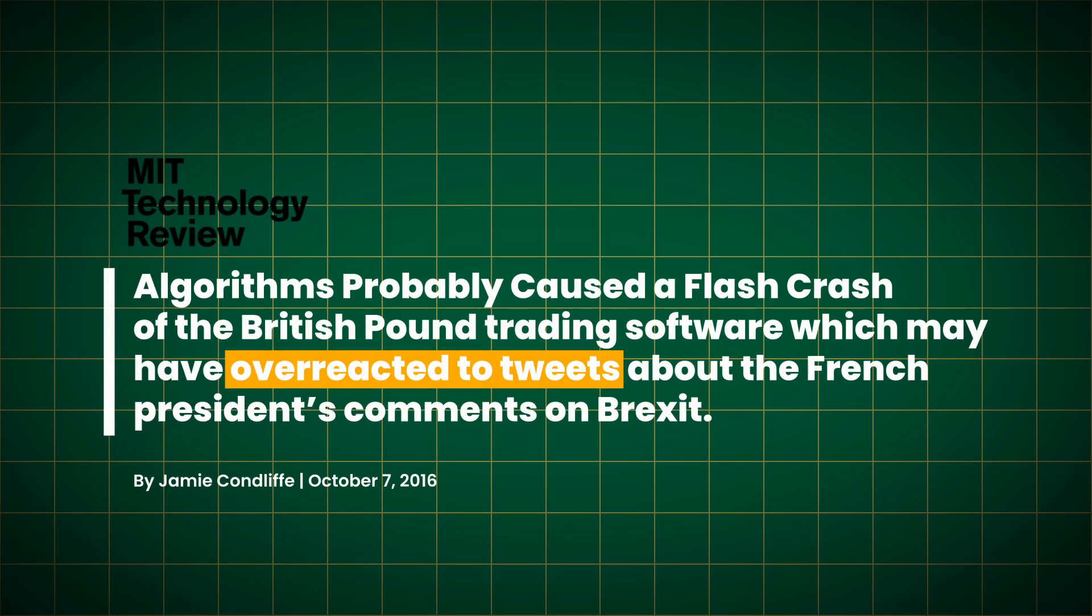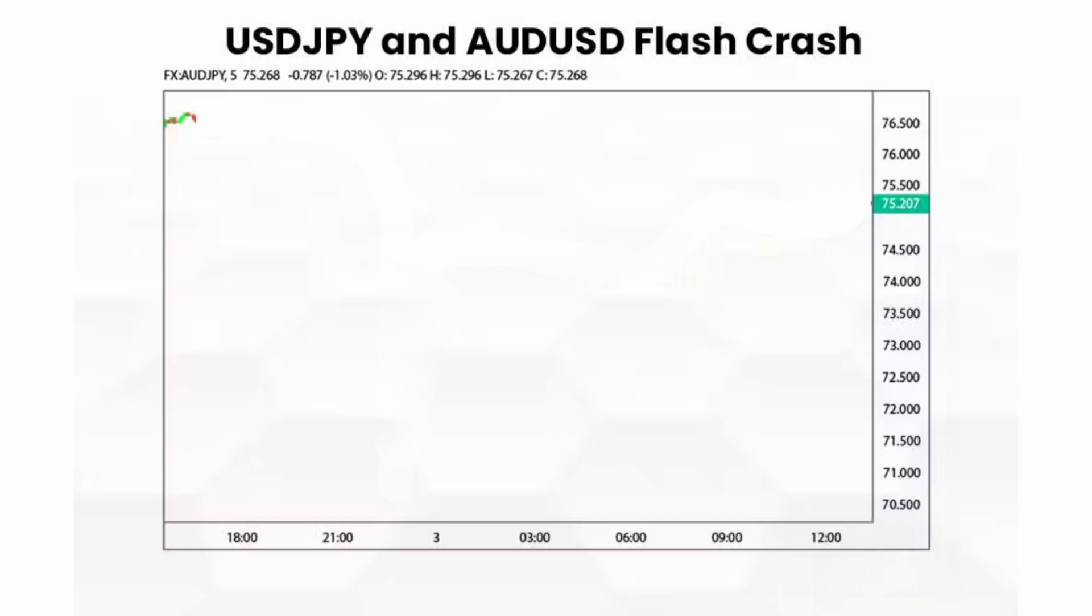Since 2012, we've had over 12,000 mini-flash crashes in individual stocks. These are moments where a stock's price plunges and recovers in seconds for no fundamental reason. It's just algorithms glitching out and causing chaos.